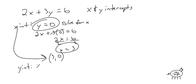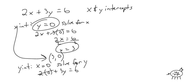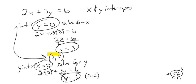For the y-intercept, set x equal to 0 and solve for y. So: 2 times 0 plus 3y equals 6. The 2 times 0 drops out, leaving 3y equals 6. Divide both sides by 3, so y equals 2. Again, I want a coordinate — if you do not put a coordinate, I will mark it wrong. So the answer is 0, 2. That is our x-intercept and that is our y-intercept.